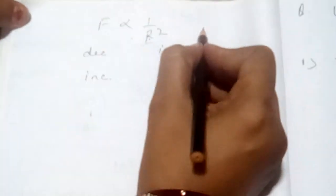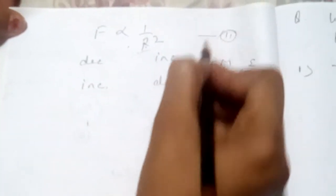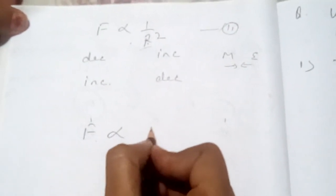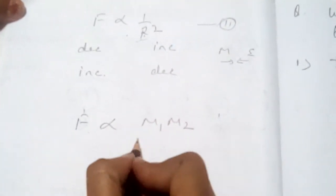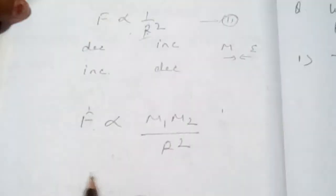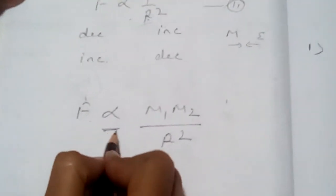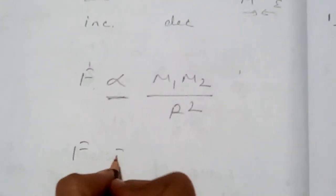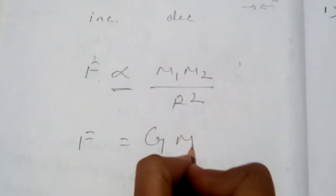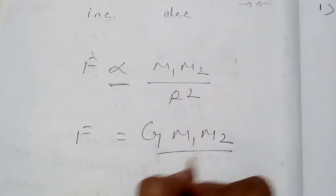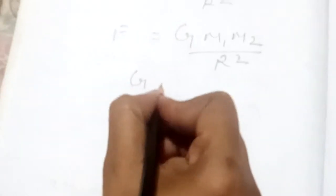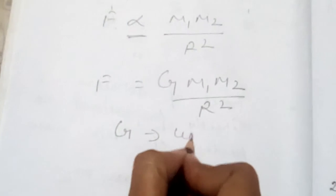So when we combine equation 1 and equation 2, we can write this as force is proportional to M1 M2 by R square. We have to remove this proportionality. So in physics we are writing one constant. It is G M1 M2 by R square. G is known as universal gravitational constant.